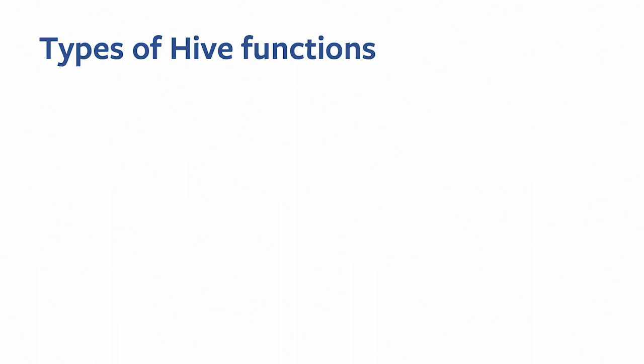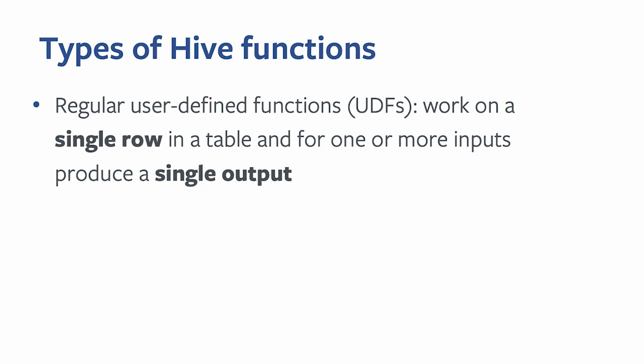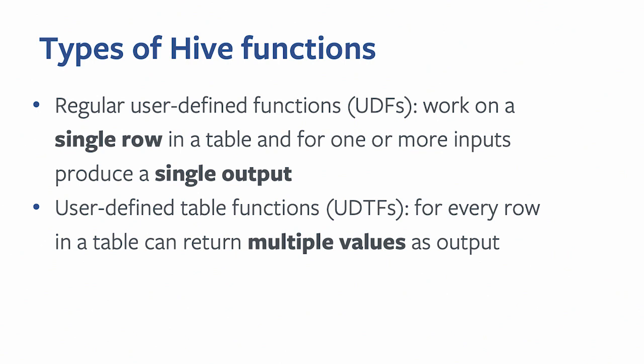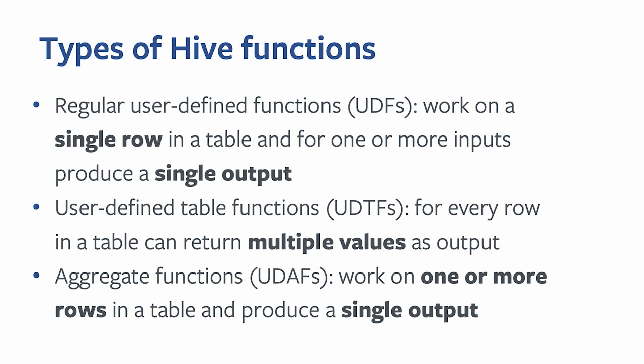Let's talk through the types of different Hive functions. The first and most popular type is regular user-defined functions. They work on a single row in a table, and for one or more inputs they produce a single output — always a one-to-one mapping. The second type is user-defined table functions, which for every row can return multiple values. The last type is user-defined aggregate functions, which work on one or more rows and produce a single output.